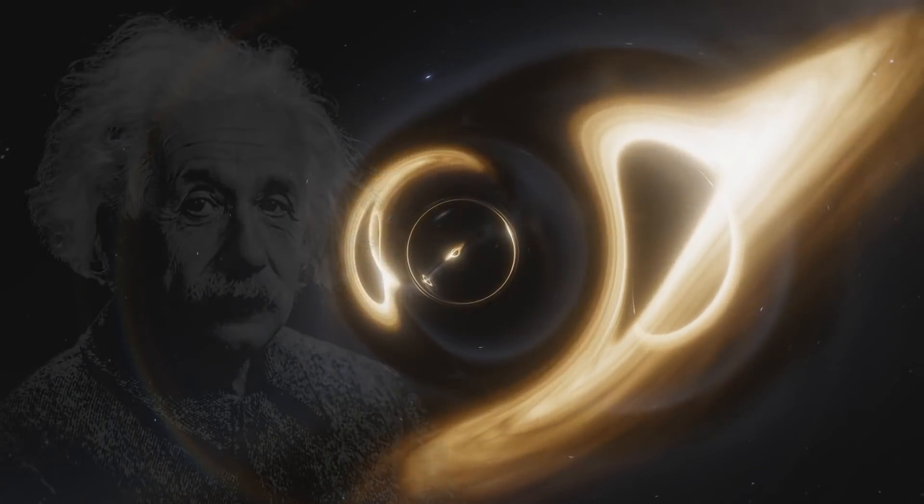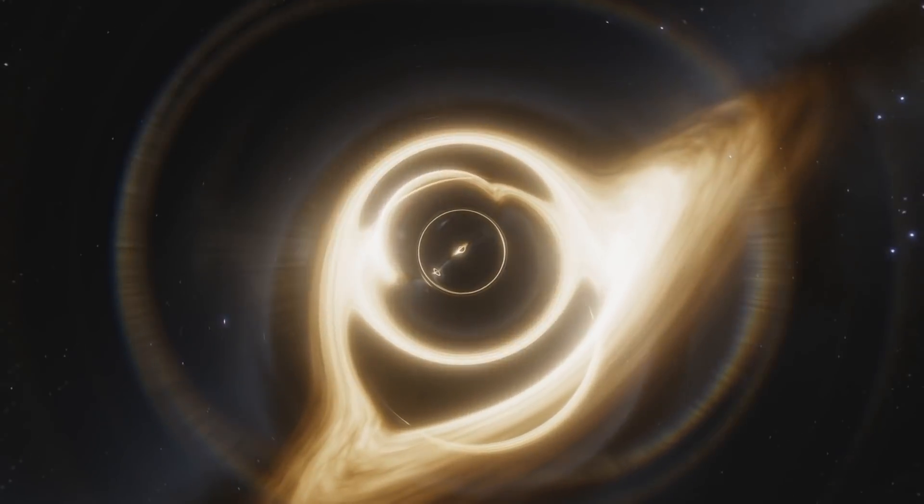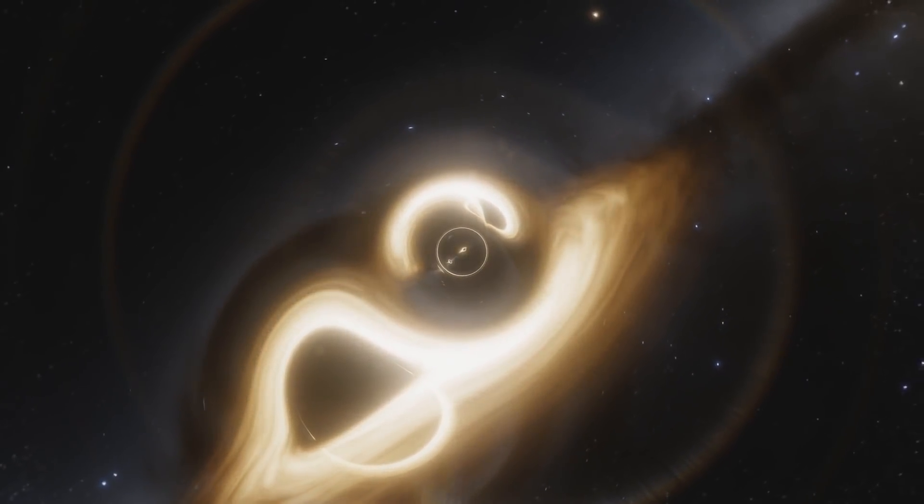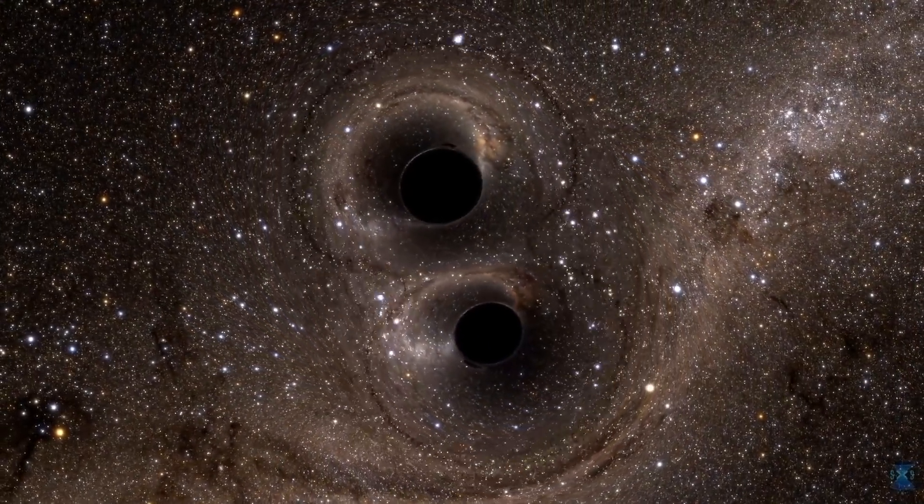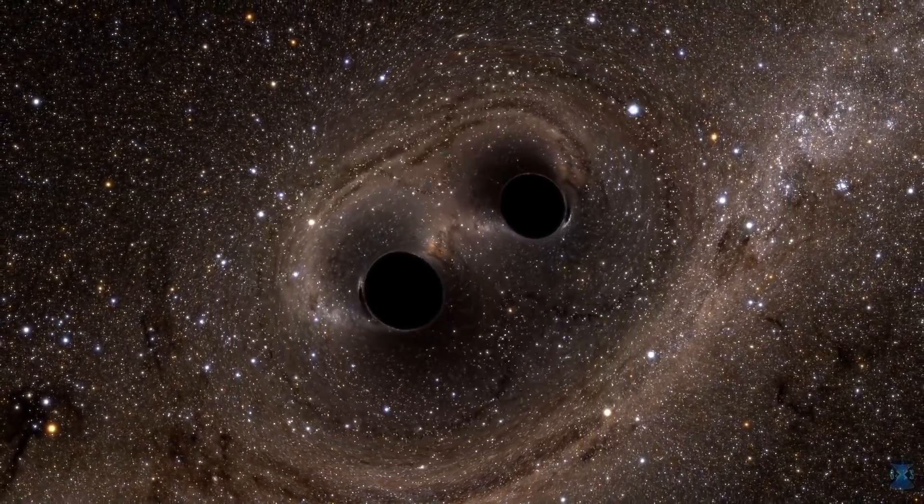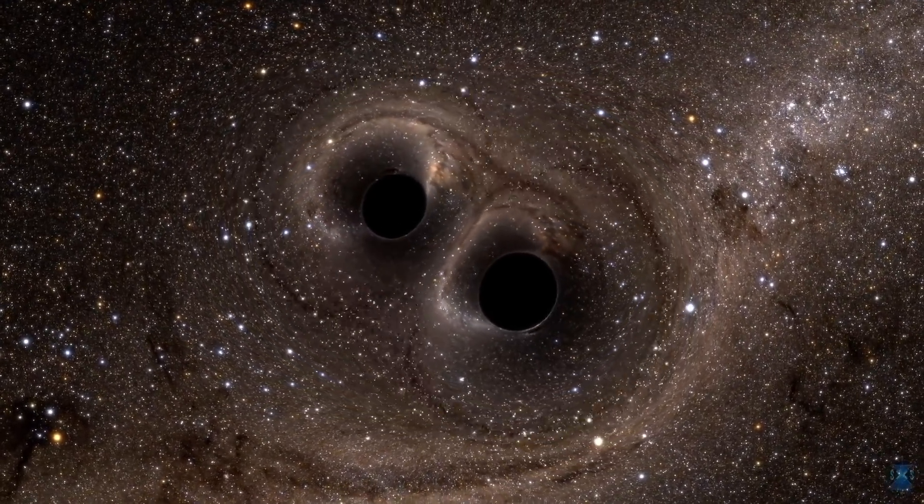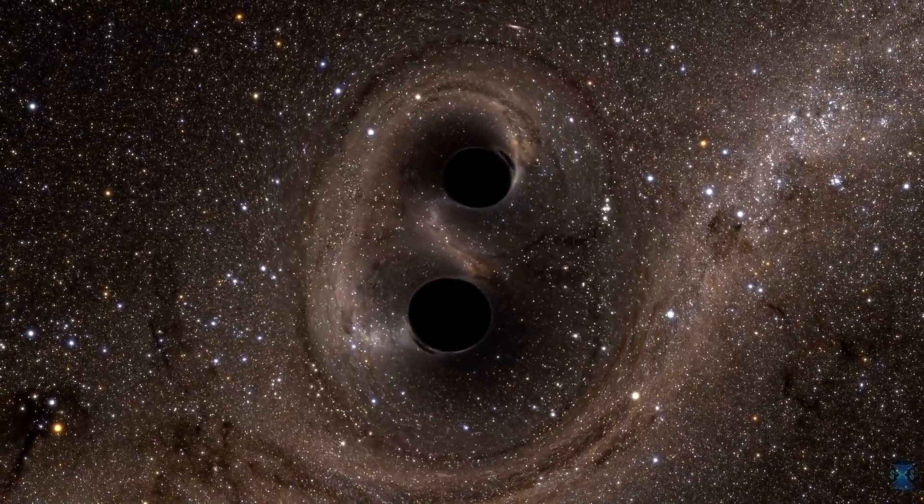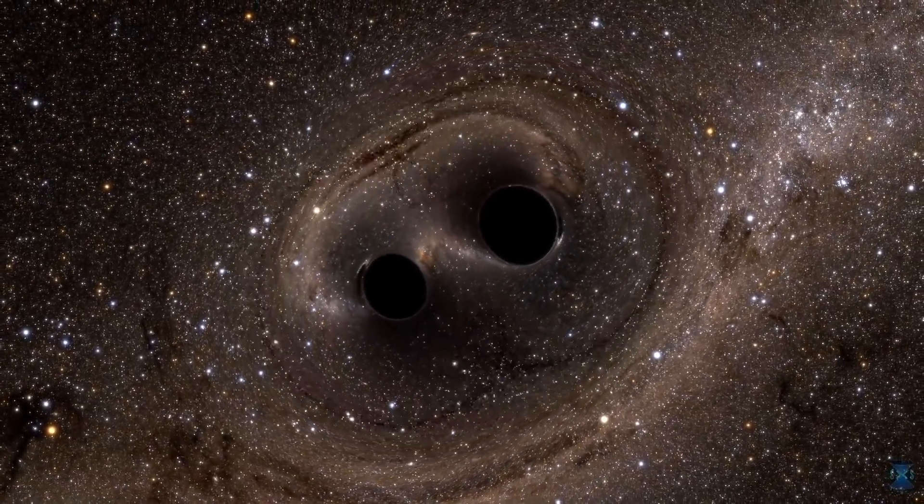100 years after Einstein came up with the general theory of relativity, scientists detected gravitational waves for the first time. These first gravitational waves happened when two black holes crashed into one another 1.3 billion years ago. So 1.3 billion light-years away, two black holes collided, and those black holes were of order 30 times the mass of the sun each.